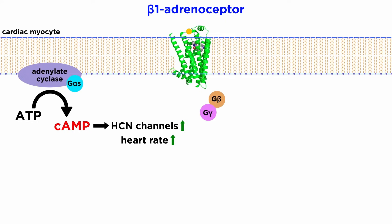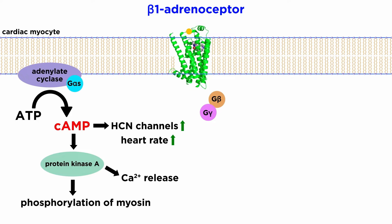cAMP increases the opening of the hyperpolarization-activated cyclic nucleotide channels, as discussed in the previous tutorial, to increase heart rate. cAMP also activates protein kinase A, which leads to increased calcium release from intracellular stores such as the endoplasmic reticulum. Protein kinase A also phosphorylates myosin, which combined with increased intracellular calcium increases cardiac muscle contractility force.